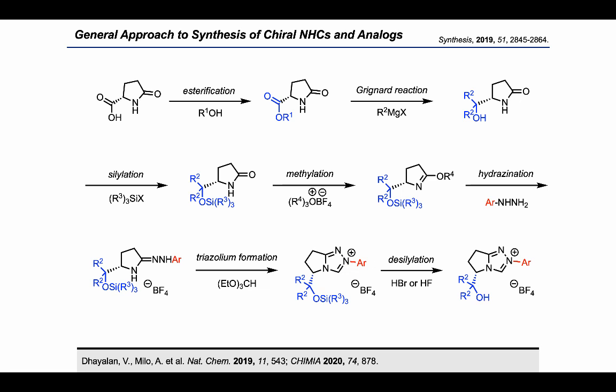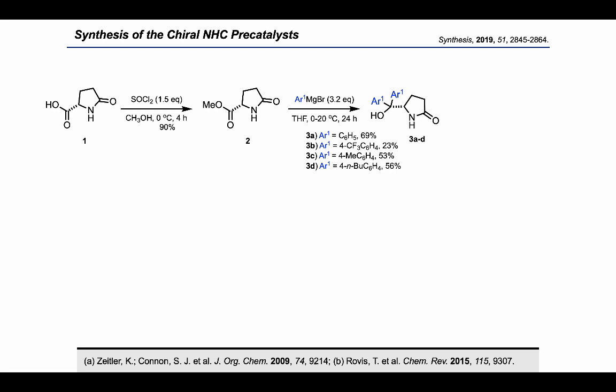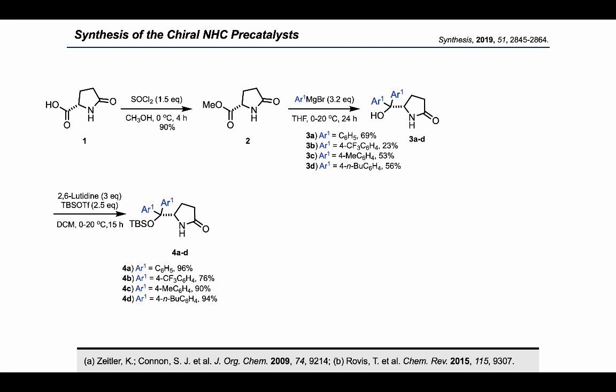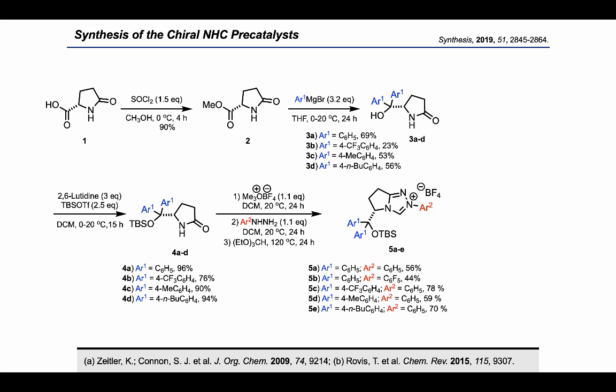This slide gives a quick overview of the general method for synthesis of chiral enantioselective NHC carbenes. The synthesis starts from commercially available pyroglutamic acid and proceeds via esterification, Grignard reaction, silylation, methylation, hydrogenation, ring cyclization, and deprotection of the silyl group to form the NHC carbene with an OH group. In the first step, thionyl chloride in methanol forms the ester. This ester reacts with two molecules of Grignard reagent to form a tertiary alcohol. The OH group is silylated in the presence of 2,6-lutidine and TBS triflate. This product undergoes a one-pot three-step reaction to produce the desired OH-protected NHC carbene in good yield.